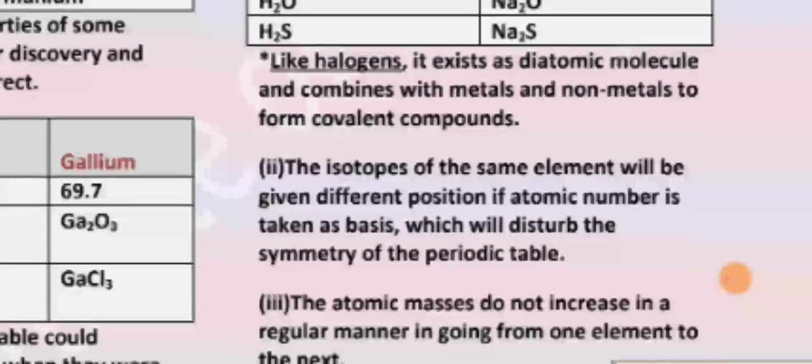The isotopes of the same element will be given different positions if the atomic number is taken as the basis, which will disturb the symmetry of the periodic table. If isotopes of the same element are placed separately, then the periodic table will get disturbed.